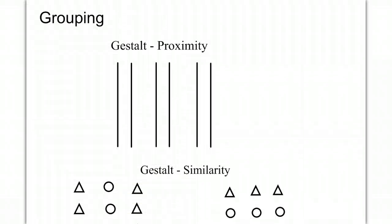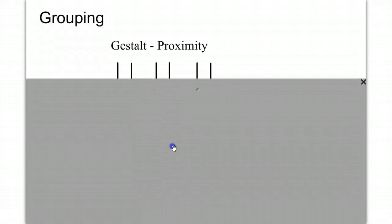In the gestalt concept of grouping, we'll look at a number of different things. First, let's look at proximity. What do you see here? Do you see six lines or three groups of lines or three columns? It's our tendency to see these lines in groups of two because they're closer together, proximity.